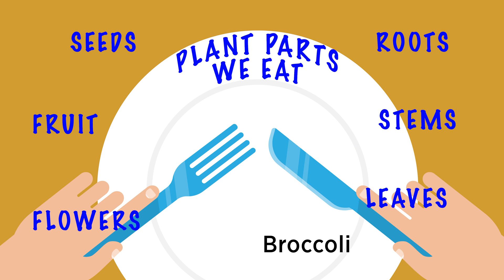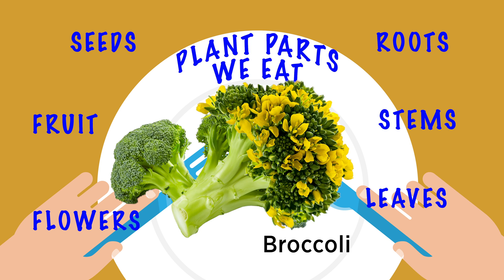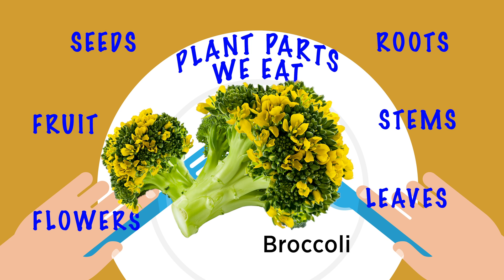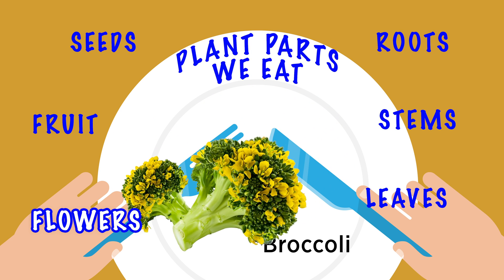Broccoli — just like cauliflower, all those little green parts on top that look like little buds are actually flower buds, and they will actually open into flowers.